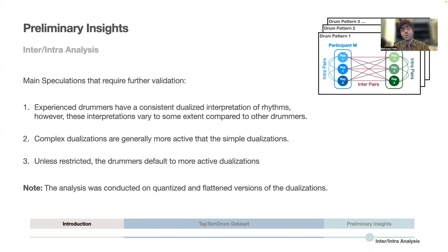Firstly, it seems that experienced drummers have a consistent dualized interpretation of rhythms. However, these interpretations may vary among drummers. Secondly, complex dualizations are more active than simple dualizations. And lastly, unless restricted, the drummers default to more active dualizations.